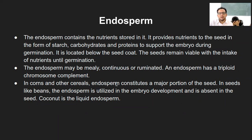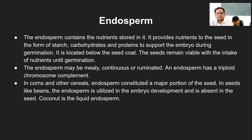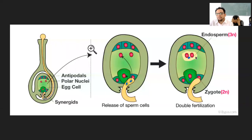There is something called endosperm. Out of the three parts — seed coat, embryo, and endosperm — we have seen seed coat and embryo. The endosperm is the nutritious part located below the seed coat, and it also forms the cotyledon part in later stages. It is coming from the triploid nucleus, which gives rise to the endosperm. The integument gives rise to the seed coat, and the triploid nucleus gives rise to the endosperm, which is the nutritious part of the seed.